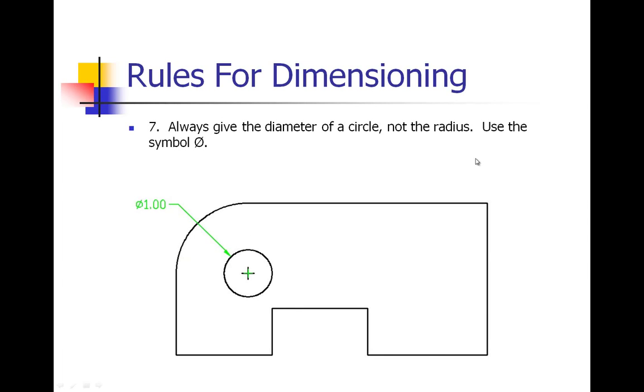Number seven: always give the diameter of a circle, not the radius. If you have a full complete circle, you are always going to give a diameter measurement using this symbol, which looks like an O with a line through it, that stands for diameter.